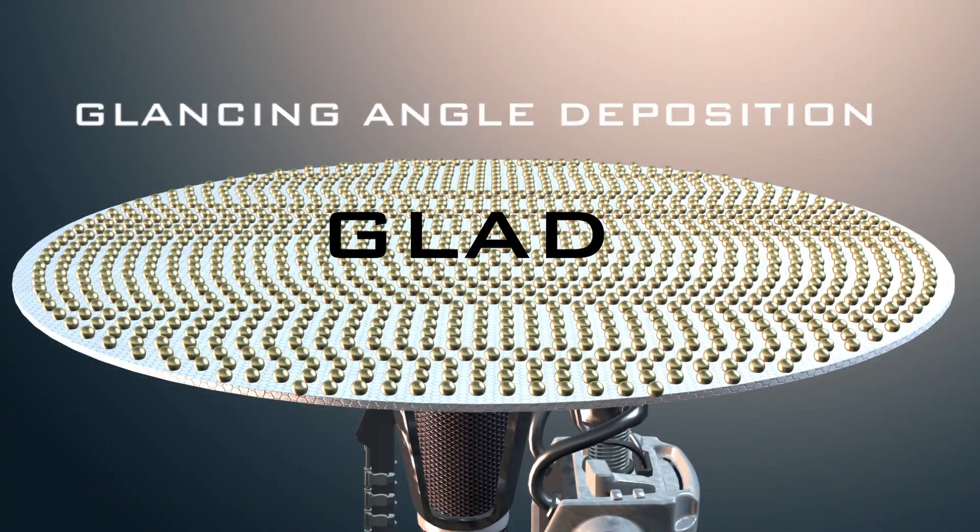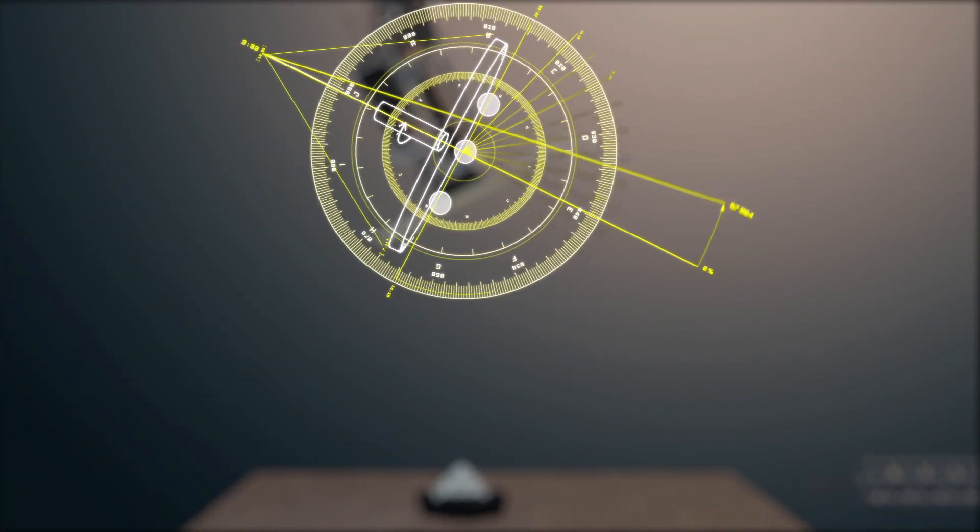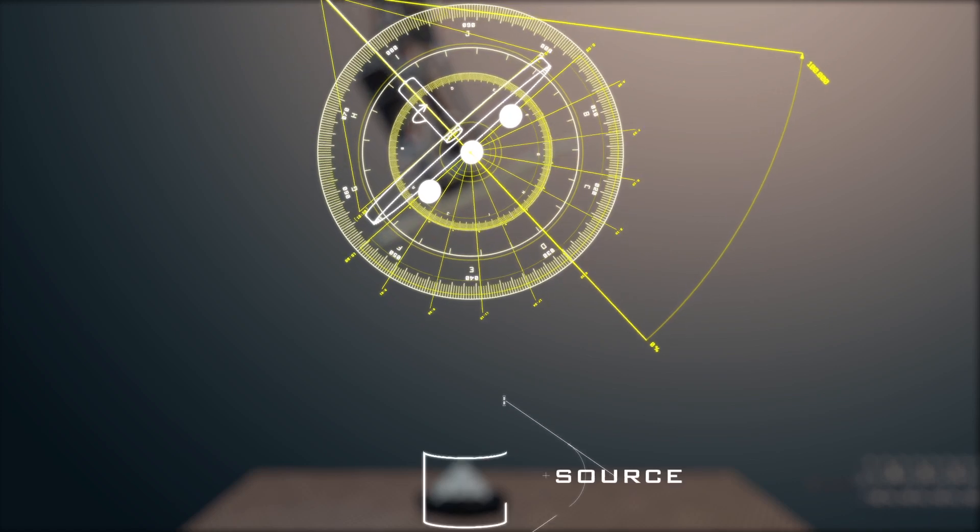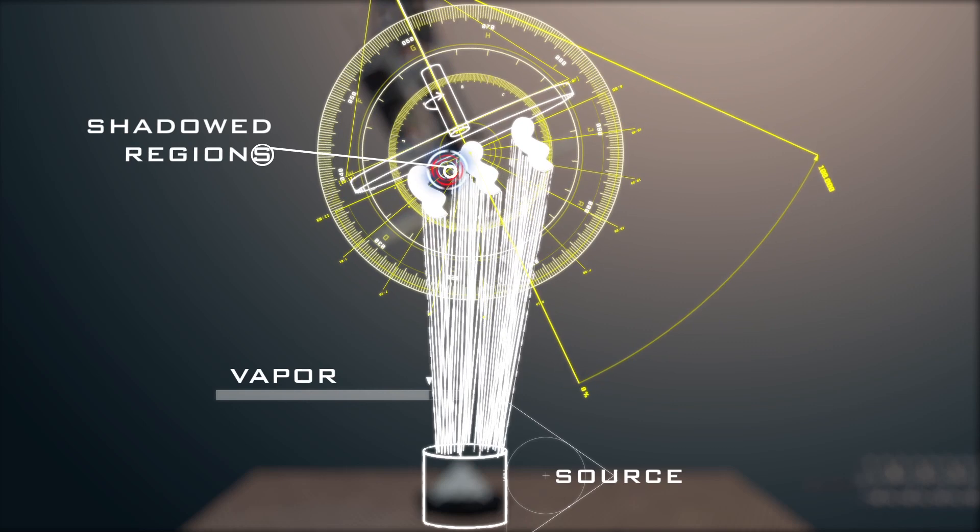Glass helices are then deposited onto the seed layer using a shadow growth vapor deposition process called glancing angle deposition. Here, the shadowing effect between neighboring particles at large angles of incident vapor flux is exploited to grow columnar structures on top of the spheres.